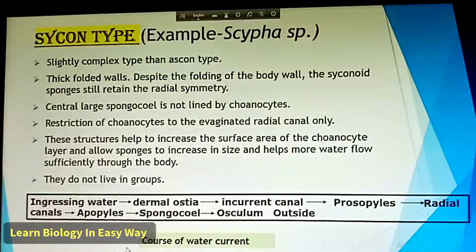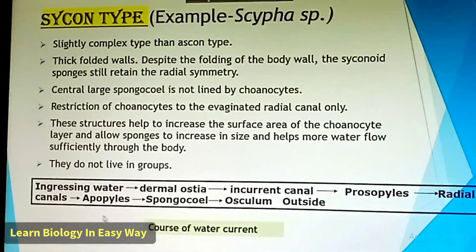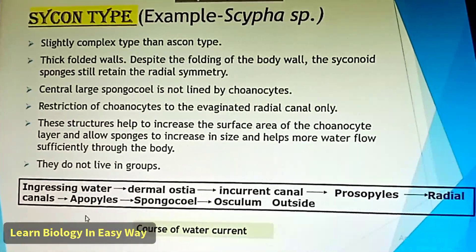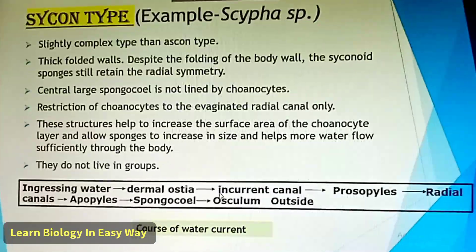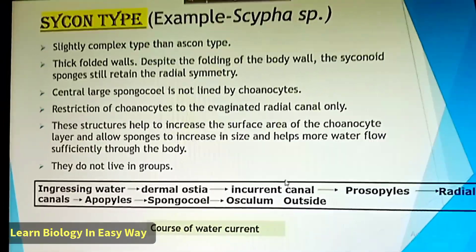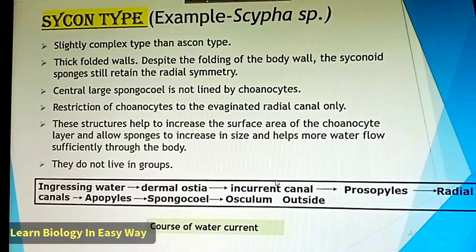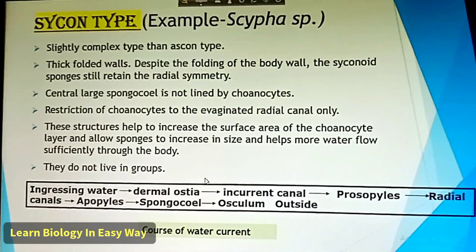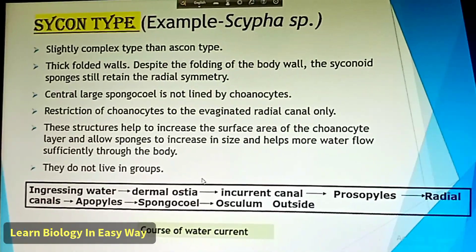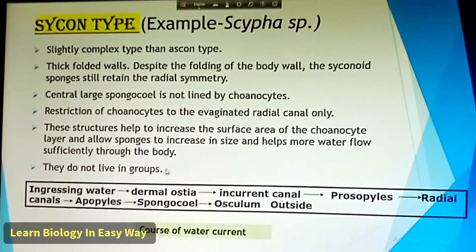Path of water current in Sycon type: ingressing water goes to dermal ostia, to incurrent canal, to prosopiles, to radial canal, to apopiles, to spongocoel, to osculum, to outside.